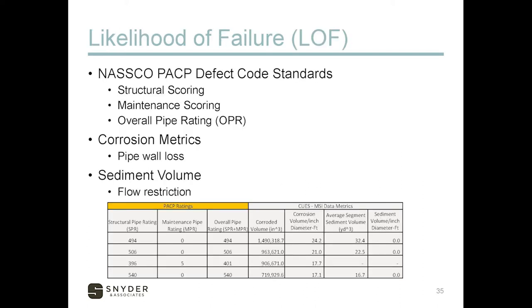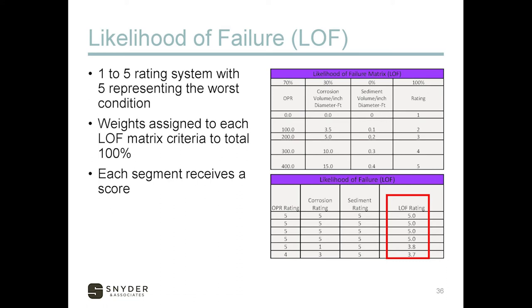The likelihood of failure is the asset's physical condition, mostly based on raw inspection data — televising data, LiDAR data, sonar data, whatever you get. PACP coding makes this more objective, and that data can be provided in a database format that can be easily manipulated electronically. In our case, we used PACP ratings plus pipe wall loss characteristics, corrosion volume, and sediment volume in the bottom, all combined into a one-to-five rating system where five is the worst condition — highest likelihood of failure.